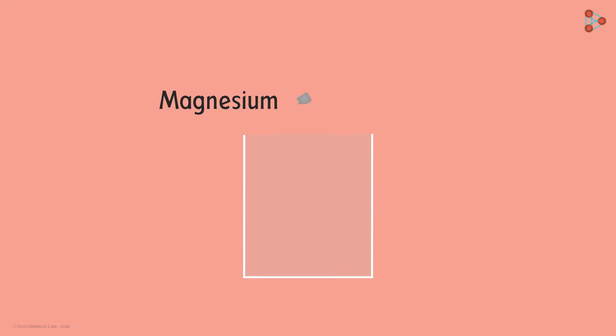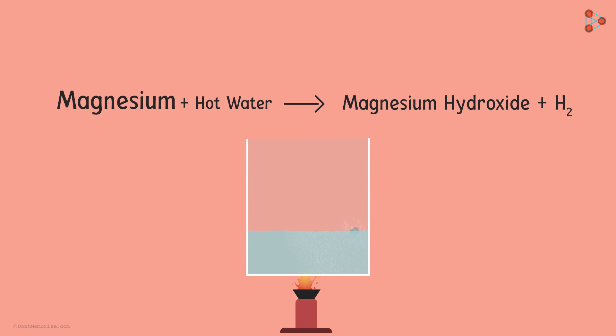And magnesium, does it react with cold water? No it doesn't. But magnesium reacts with hot water to form magnesium hydroxide and hydrogen gas. And just like calcium, it starts floating due to the bubbles of hydrogen gas sticking to its surface.